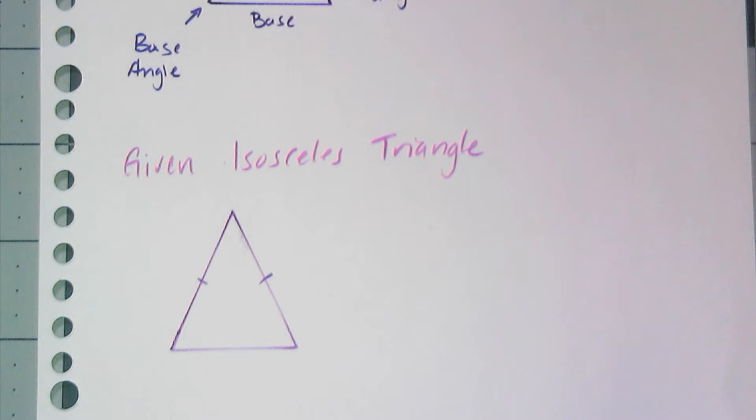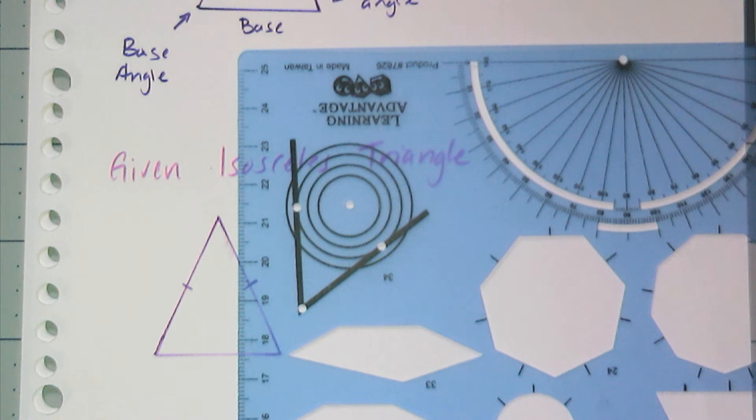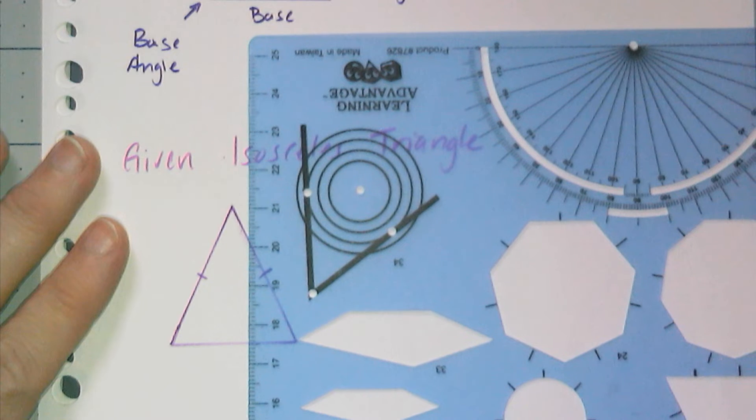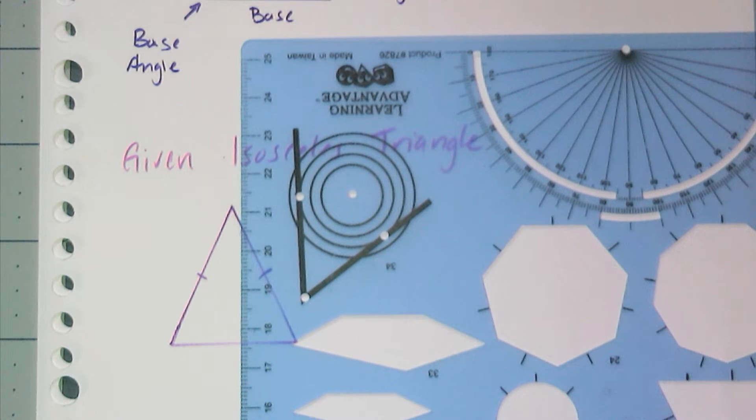But we just did a whole bunch of stuff about special points of concurrency of a triangle. And I know from the study of the points of concurrency that there's something special about the points of concurrency and the isosceles triangle.